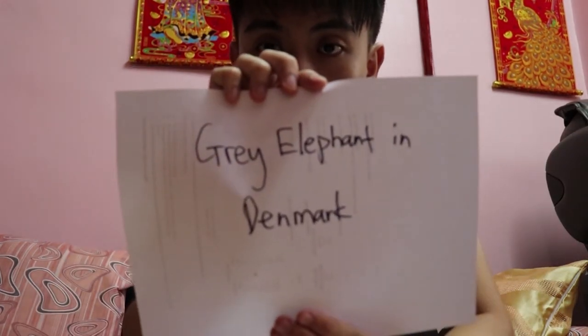Think of the country that you have selected and pick out the second letter. I would like you to think of an animal starting with the second letter of the country. Alright, got it? So I guess I know the animal as well as the country you have selected. Let me show you — is it a grey elephant in Denmark?